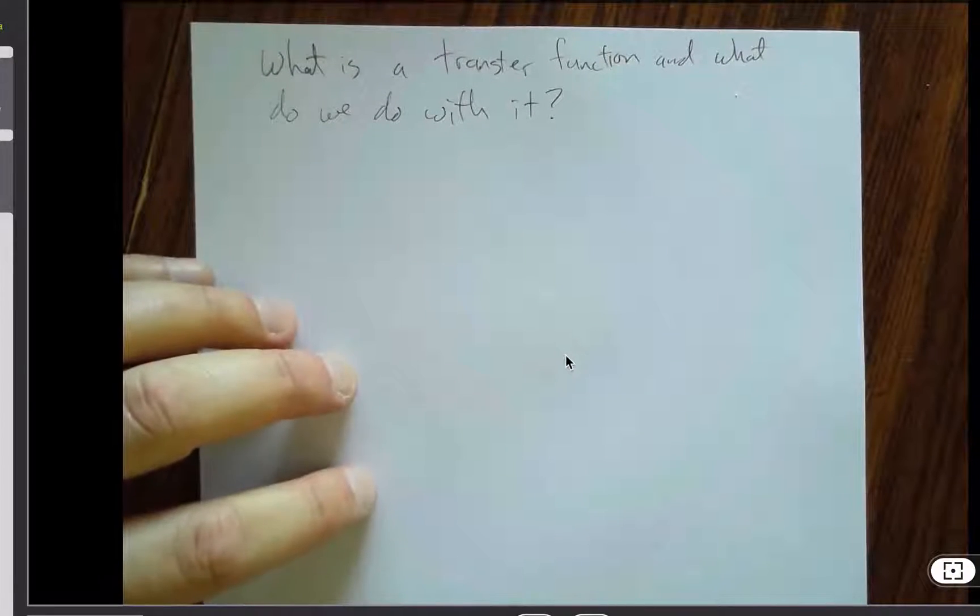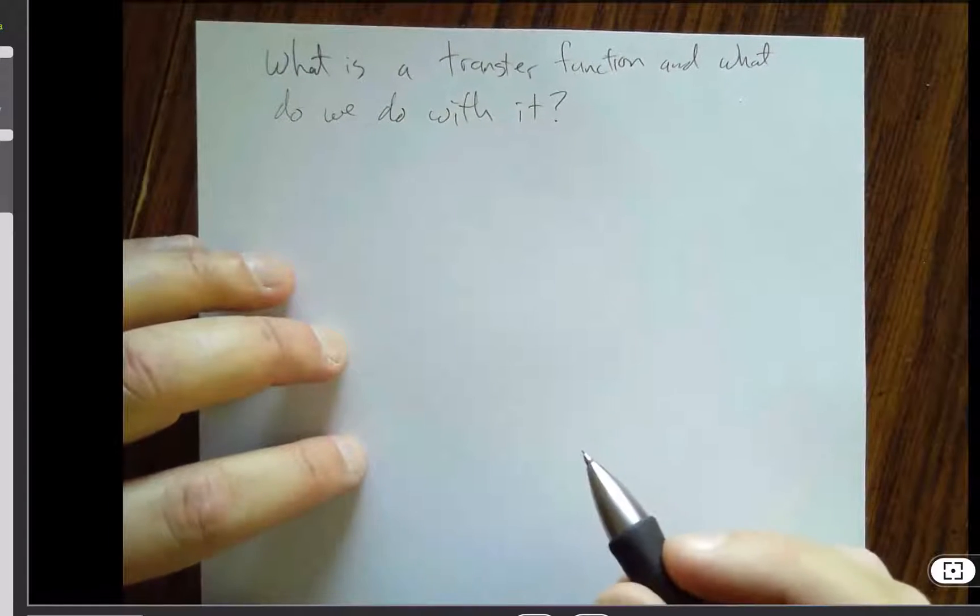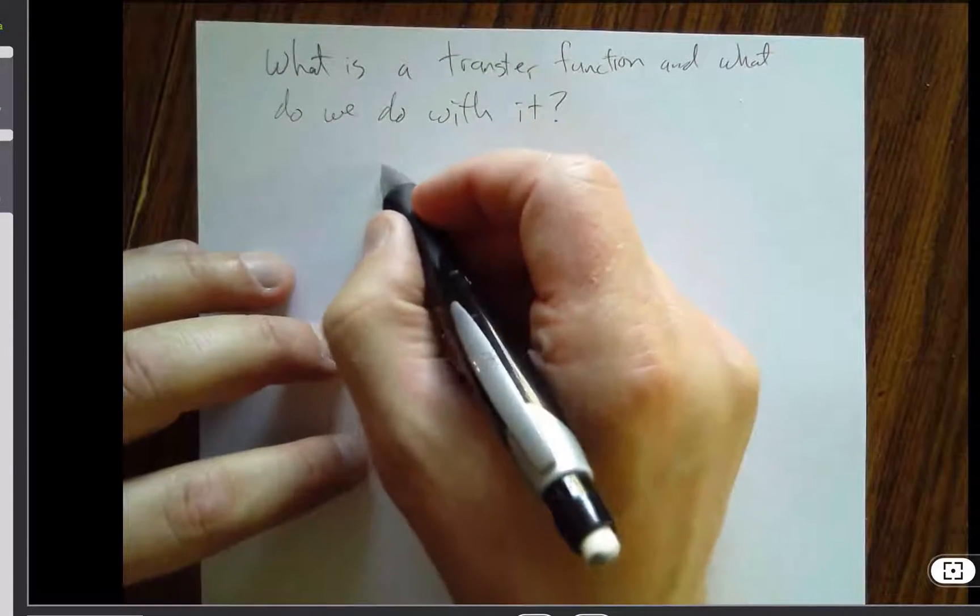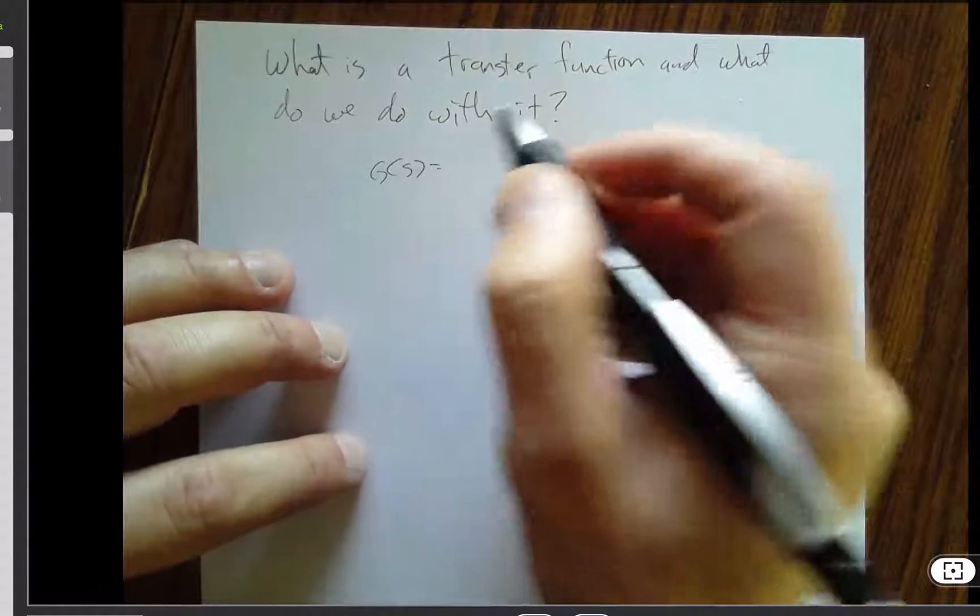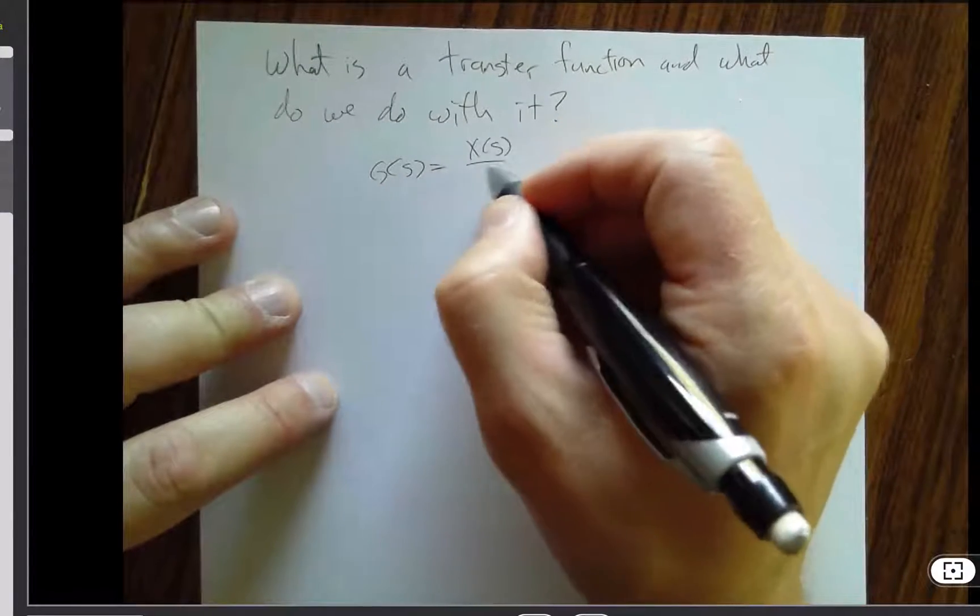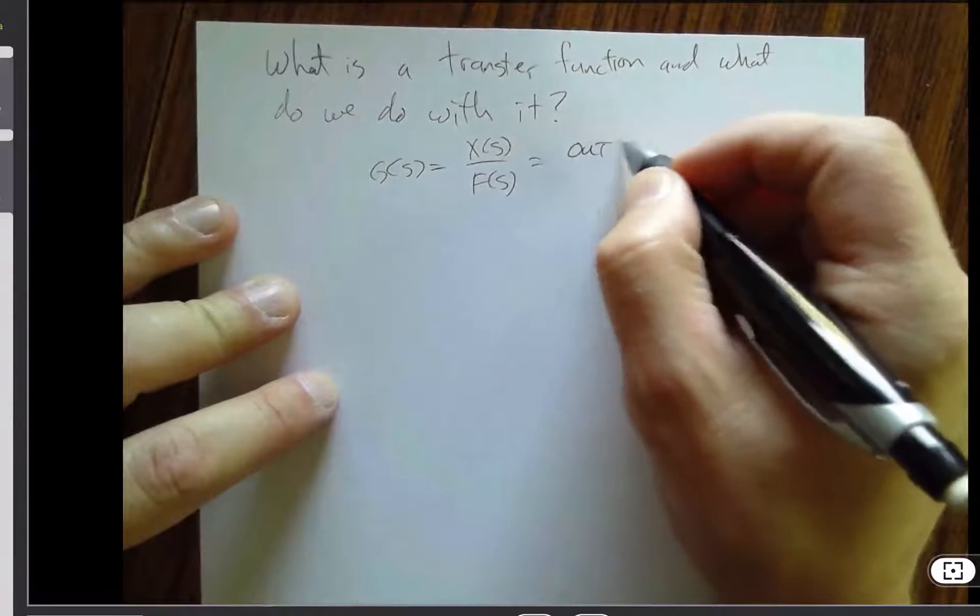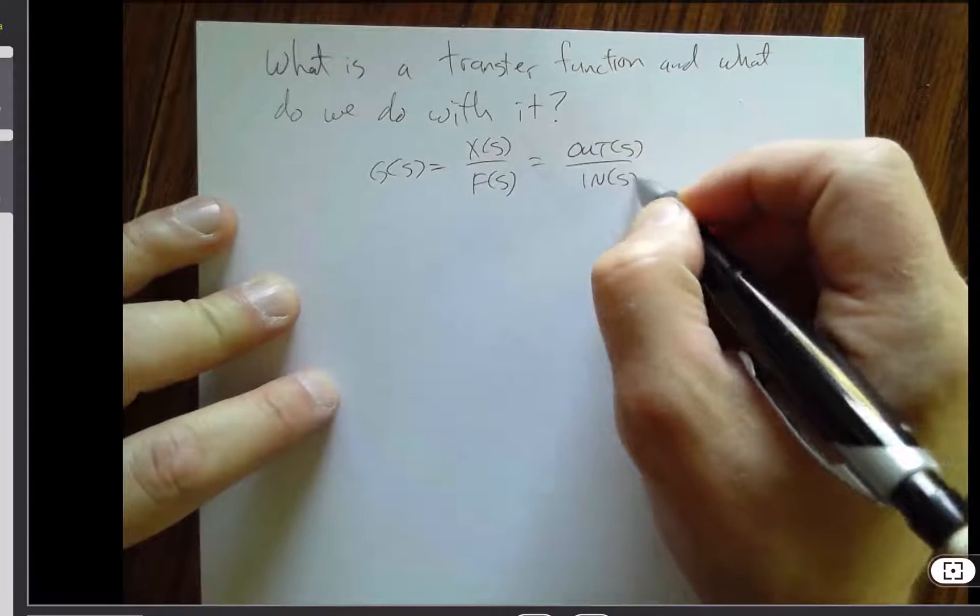So to some degree this is a lab question and sort of a review question, but I want to be clear on it. It's really, really important that we understand. So a transfer function, we've been talking about this mass spring damper system, and so we have x over f, or more generally we have out of s divided by in of s.